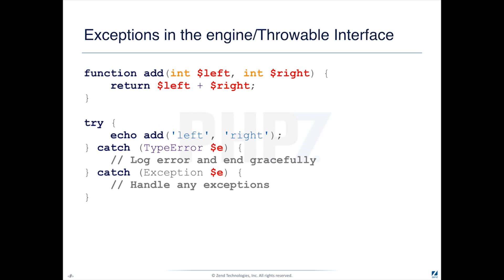Here's what this looks like. We've got a function called add, and it has two parameters — left and right — and they're both ints, and we just return left plus right. Now, if we've got strict typing turned on, then if we call add with the strings 'left' and 'right', we're going to get an error. It's going to be of the type TypeError, and you can see right there we catch it — we can log it, note the problem, and end our program gracefully. I also want to catch any exceptions, because if there's anything else going on, I want to catch the exception and possibly handle it and recover from it. But those are two different things.